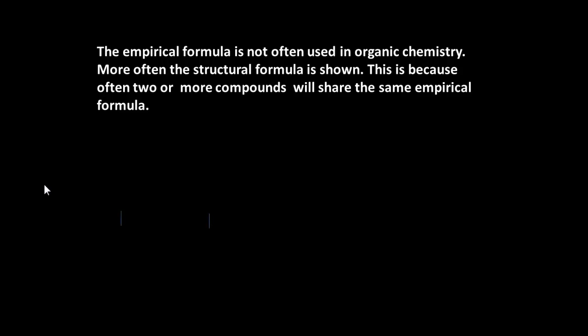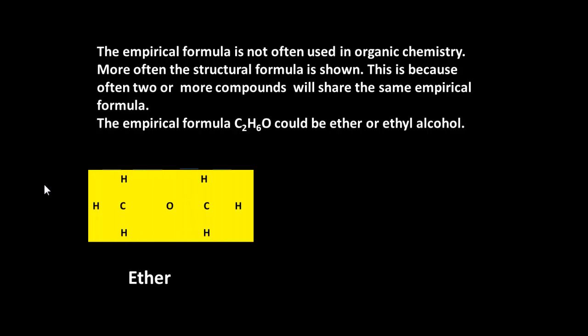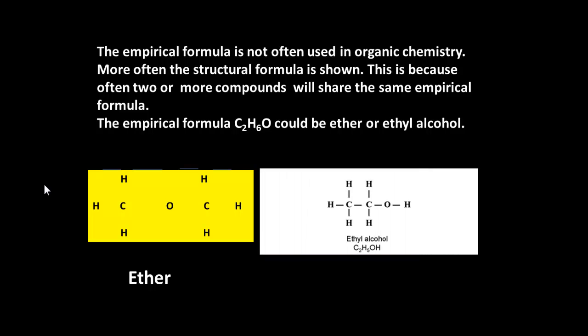The empirical formula is not often used in organic chemistry. More often the structural formula is shown. This is because often two or more compounds will share the same empirical formula. So here's an empirical formula C2H6O and that could be one of two compounds. It could be CH3OCH3, the oxygen in the middle joining two methyl groups and that would be ether, or the oxygen could be on the end as part of an OH group in which case it will be ethyl alcohol and these two substances have very different properties.